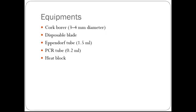Equipment required: cork borer 3 to 4 mm diameter, disposable blade, Eppendorf tubes 1.5 ml, PCR tubes 0.2 ml, and a heat block.